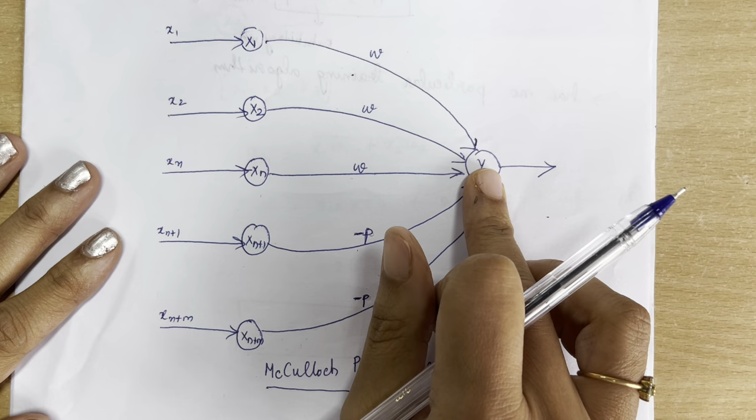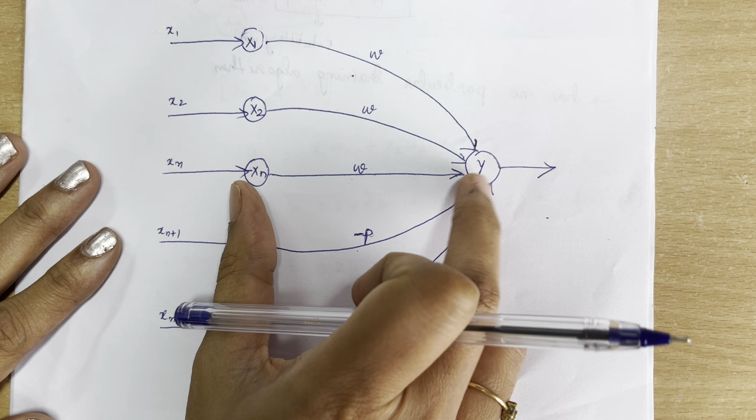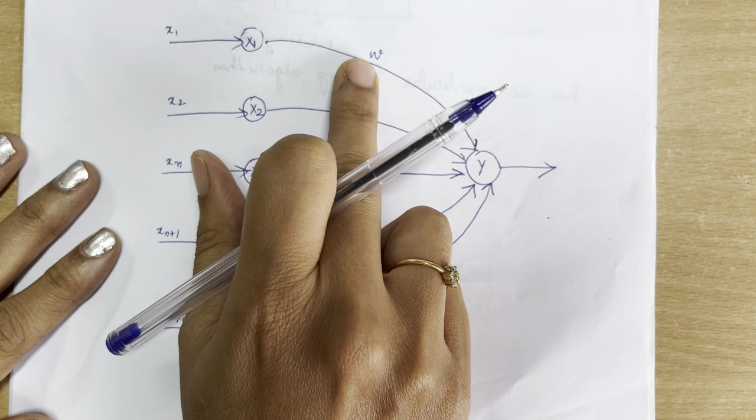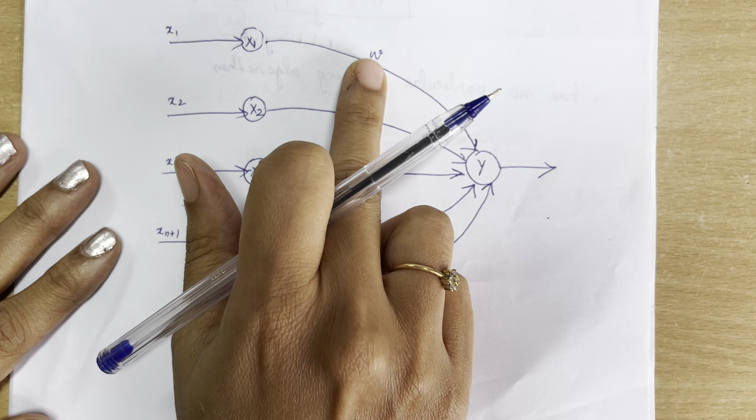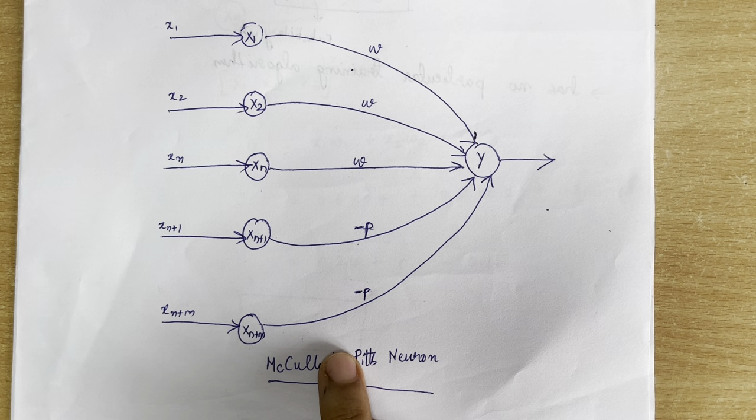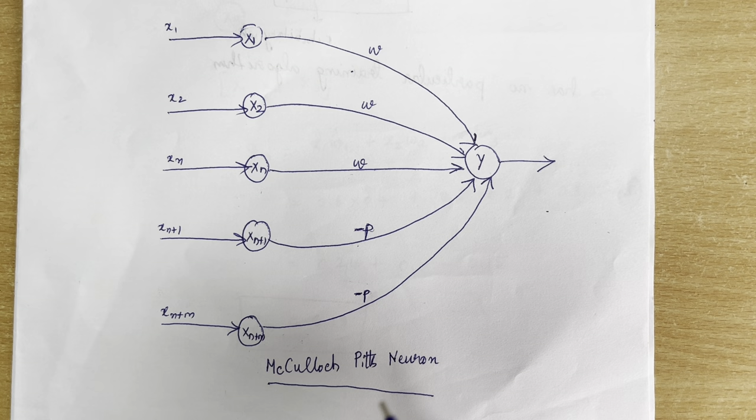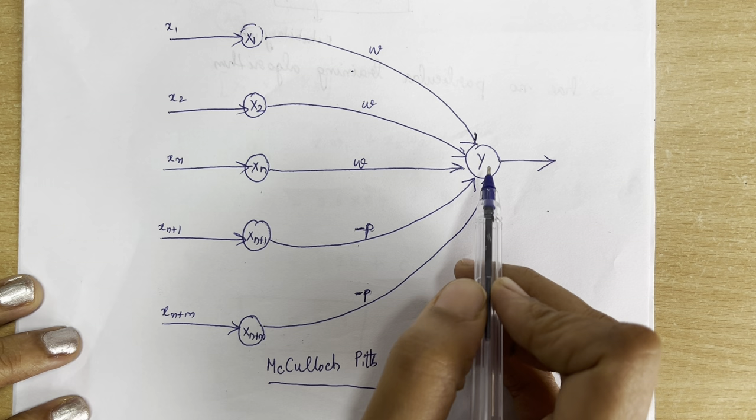These are all the input nodes and y represents the output node. Between these two nodes there is a communication link between the input node and the output node. Each communication link has a weight associated with it. The weights may be excitatory (positive) or inhibitory (negative). In this diagram, positive weights are represented by w and negative weights are represented by minus p.